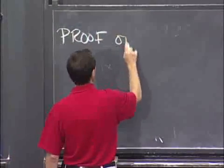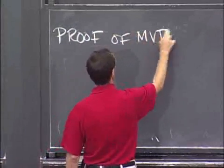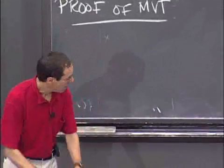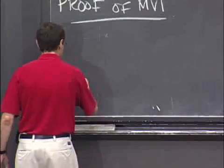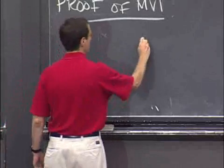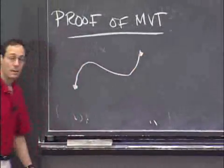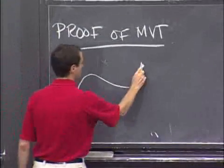So here's the proof of the mean value theorem. It's really just a picture. Here's a place and here's another place on the graph. The graph is going along like this, let's say.